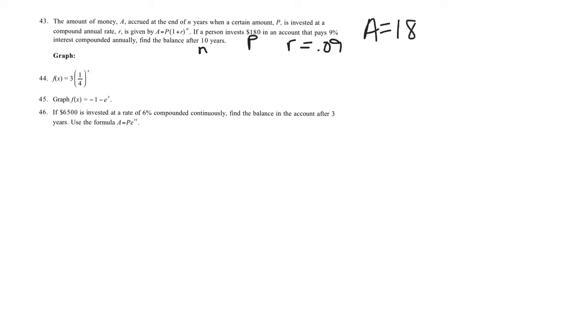So it's A equals 180 times 1 plus 0.09 to the 10th power. We're going to do 1.09 to the 10th power in our calculator, and we get 180 times 2.367. We're going to leave that unrounded in our calculator, but I rounded it to write down on my paper. Multiply by 180, and we get A equals $426, and now as my final answer I'm going to round it to the hundredth place because I'm talking about money.